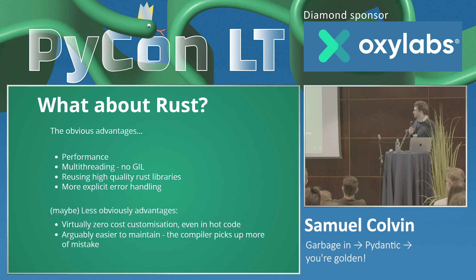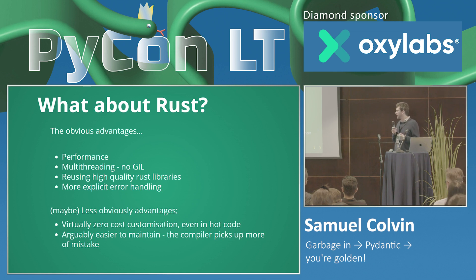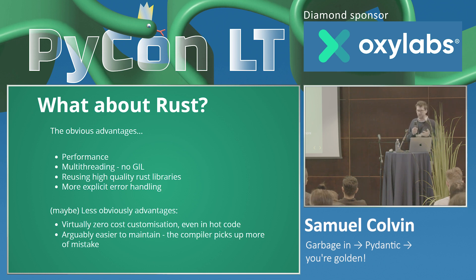So, Rust. What about building the core validation logic of Pydantic in Rust? Some advantages are obvious: performance, the GIL situation in Python meaning multi-threading is easier in other languages, use of high-quality libraries already written in Rust, and Rust's big feature after performance — safety. You're basically forced to catch every single error you might get, which is super helpful in a context like Pydantic where all we're doing is worrying about errors.